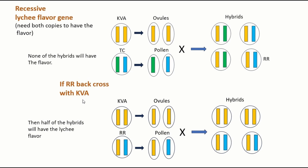So once you have a recessive gene and you want to have the recessive phenotype expressed, you need to do a backcross from the hybrid back to their parents. In this situation, half of the hybrids will have the recessive gene expressed to show that phenotype.